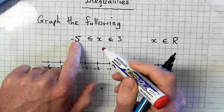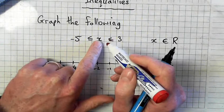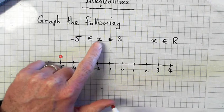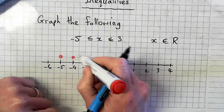Can I include minus 5 this time? Yeah, I can, because x is equal to minus 5. And everything greater than that, greater than minus 5, going up.